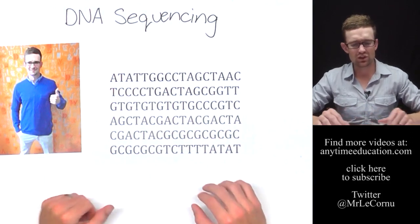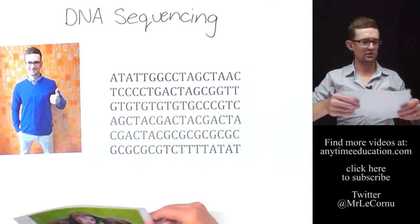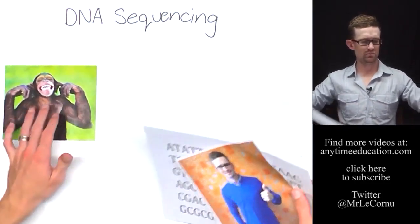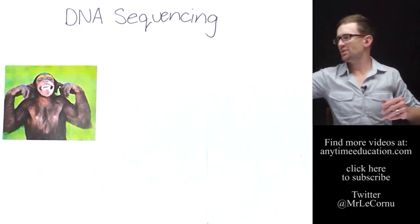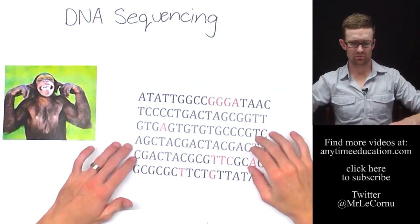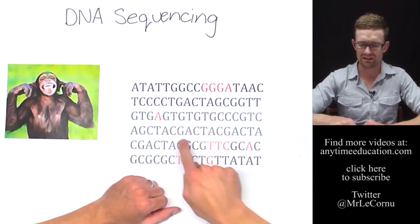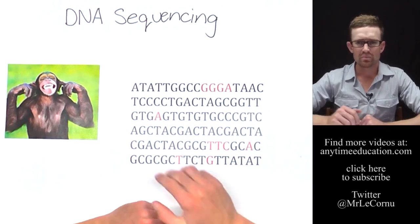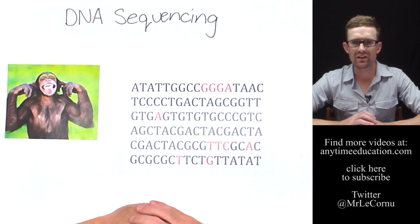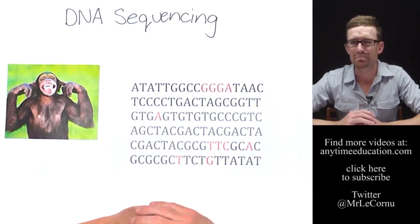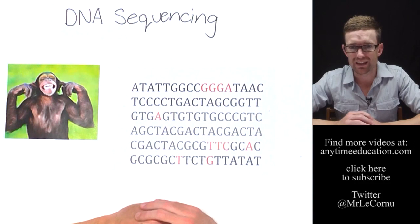So if this is human, and we were to compare that to chimp, let's take away human, and bring in chimp. So for chimpanzee, you can see the red bits are where the differences are. But overall, there's quite a bit of similarity between the human and the chimpanzee DNA. In fact, between human and chimpanzee DNA, there's an amazing 98% similarity.